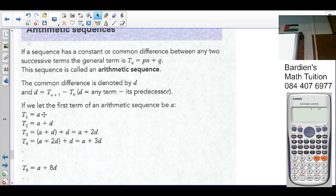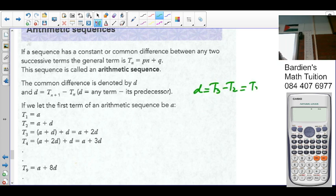The common difference is denoted by d, and d equals Tn+1 minus Tn. D is any term minus its predecessor, basically the term that comes prior to it. Remember we wrote it down as T3 minus T2 equals T2 minus T1. If that is evident, you can say it's arithmetic or a linear pattern.